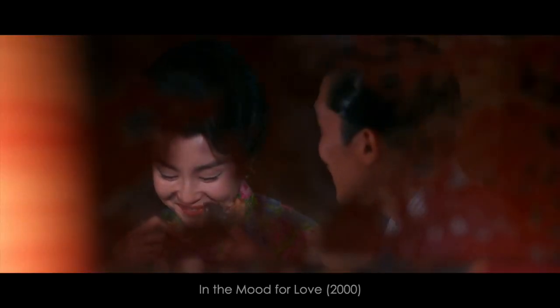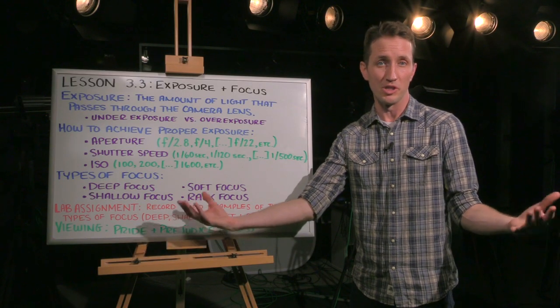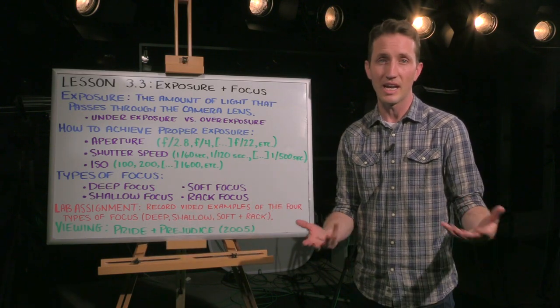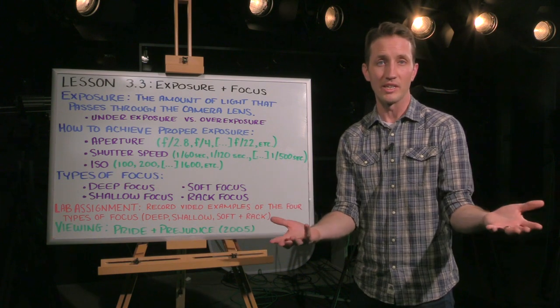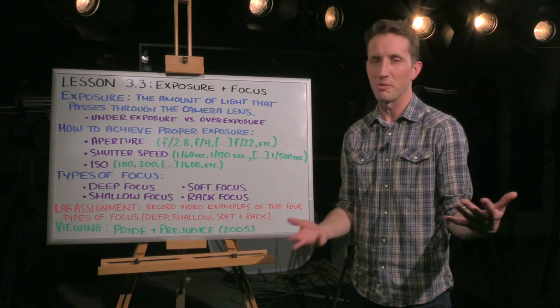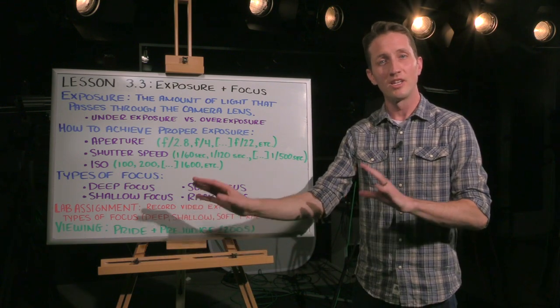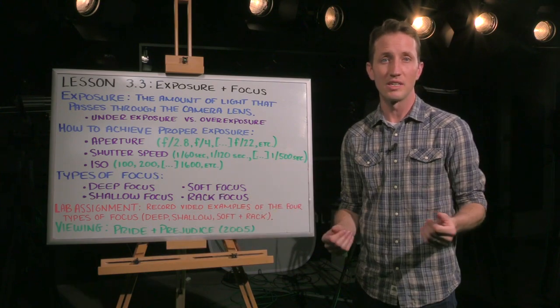When the director or the DP wants the audience to focus on a very specific part of the image, then they would put that part of the image in focus, blur everything else out, and now we as an audience are going to naturally look at the part of the image that's in focus, not the part that's out of focus. So it's a cool way to direct the viewer's attention.